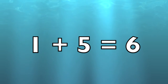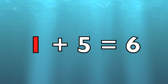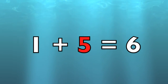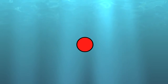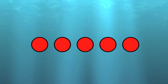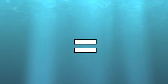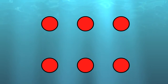One plus five equals six. One circle plus five circles equals six circles.